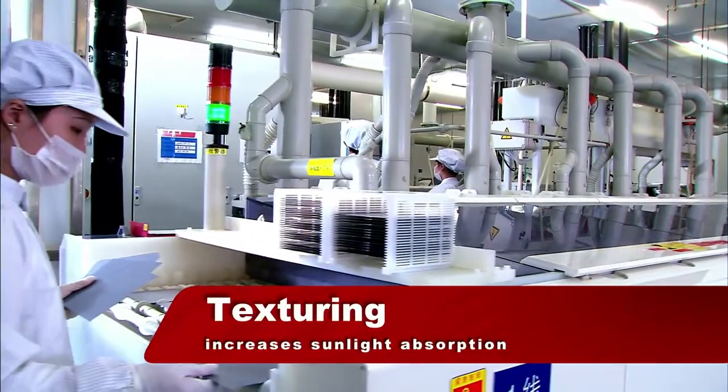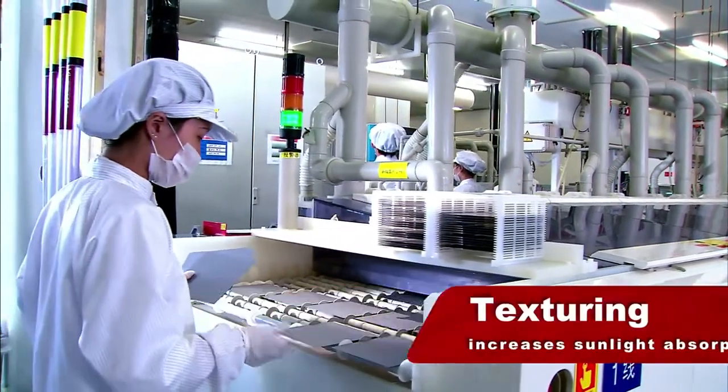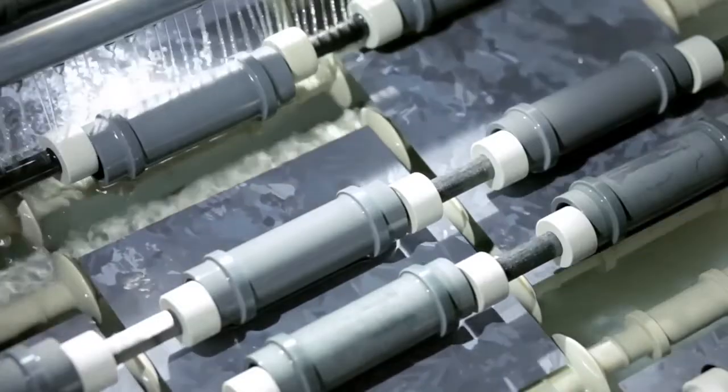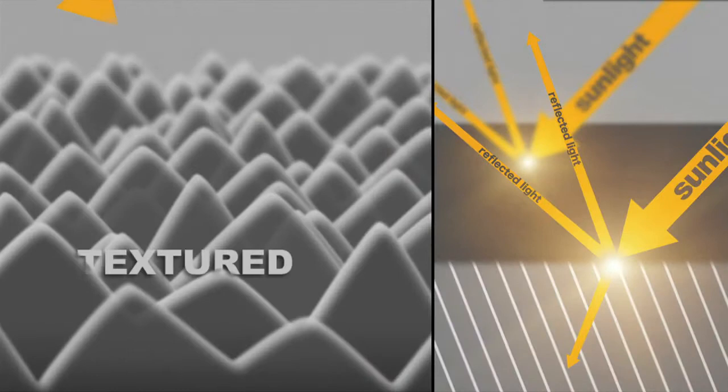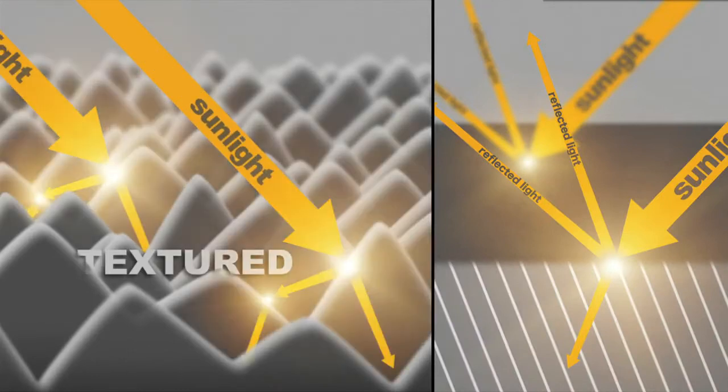Cell production begins with SunTech's patented texturing process. An etching solution forms pyramid-like structures on the surface of the monocrystalline silicon wafer, reducing reflectivity from over 30% to around 11%.